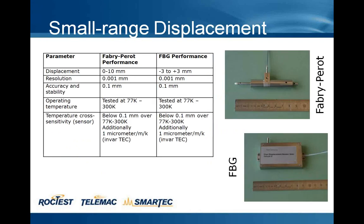First, small displacement sensors. We have Fabry-Perot and Fiber Bragg grating short-range displacement sensors that typically measure movement over a few millimeters — for example plus/minus 3 mm for Bragg grating or 10 mm for Fabry-Perot — with resolution in the micron range. The accuracy is typically 0.1%, including all temperature effects over the whole range from room temperature to cryogenic, so calibration curves obtained at room temperature can be applied at cryogenic temperatures as well.